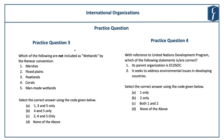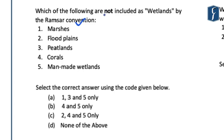Practice question 3 deals with the Ramsar Convention. Ten wetlands have been added to the Ramsar site list from India, making it important to revisit the Ramsar Convention. The question is: which of the following are NOT included as wetlands by the Ramsar Convention? Statement 1: Marshes. Statement 2: Flood plains. Statement 3: Peatlands. Statement 4: Corals. Statement 5: Man-made wetlands. The Convention on Wetlands, also known as Ramsar — named after the city in Iran — was finalized in 1971 and is an intergovernmental treaty whose mission is the conservation and wise use of all wetlands through local, regional, and national actions and international cooperation.